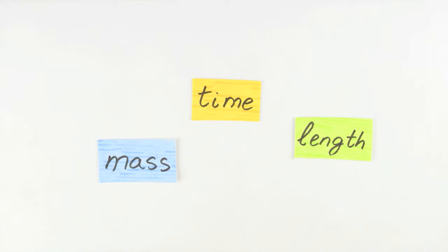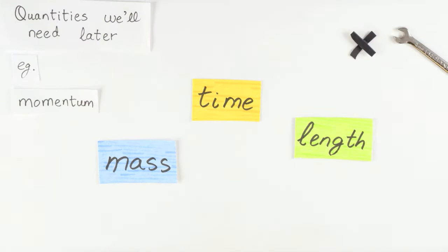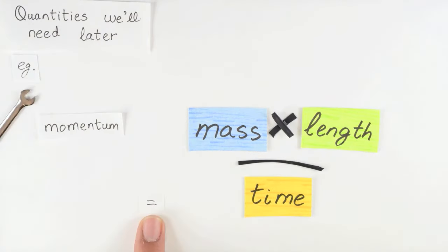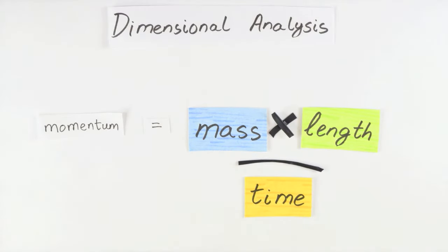Now length, time, and mass are considered the basic physical quantities we need to describe motion because almost all other physical quantities we'll need for motion can be systematically organized in terms of these big three as part of a process we call dimensional analysis.